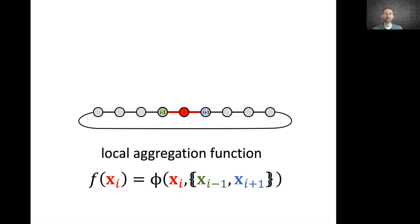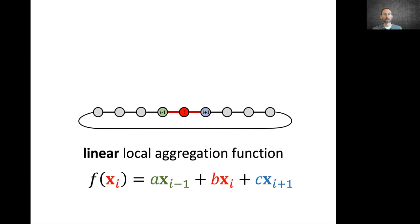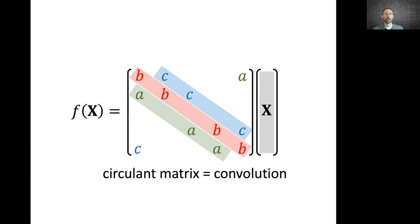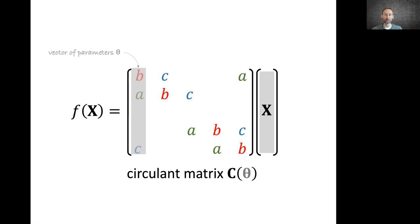I remind you that on general graphs, we're forced to use a permutation invariant local aggregation function φ, because we didn't have a canonical ordering of the neighbors. On a grid, we do. We can always order our nodes, for example, green, red, and then blue. If we choose a linear function with the sum aggregation operator, we get the classical convolution. If you write it as a matrix, we get a special structure called the circulant matrix. A circulant matrix can be formed by shifted copies of a single vector of parameters that I denote here by θ. That's exactly the shared weights in CNNs.